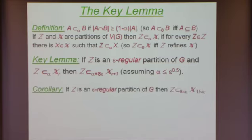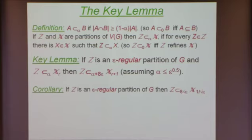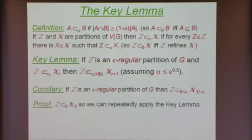I claim that once you believe this key lemma, we are done. We immediately get the corollary: if Z is an epsilon-regular partition of G, then it is (8 square root epsilon)-contained in X_{1/sqrt(epsilon)}. Remember that X_{1/sqrt(epsilon)} is the finest partition. Any partition Z is 0-contained in X_0, because X_0 is the entire vertex set. Then you just apply this key lemma over and over again until you get this fact.